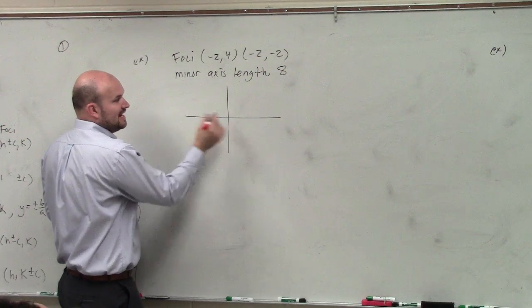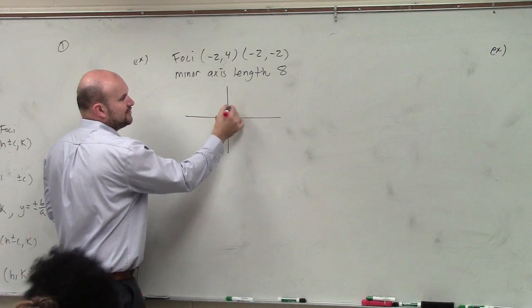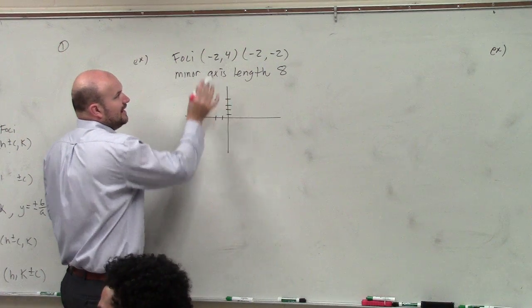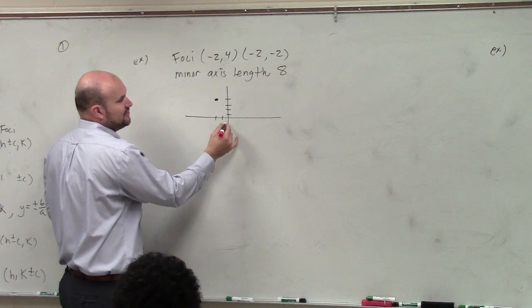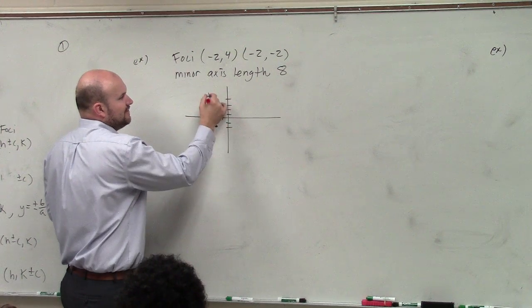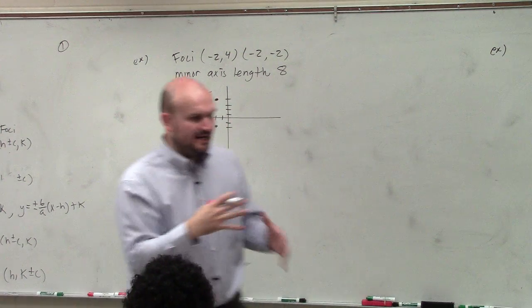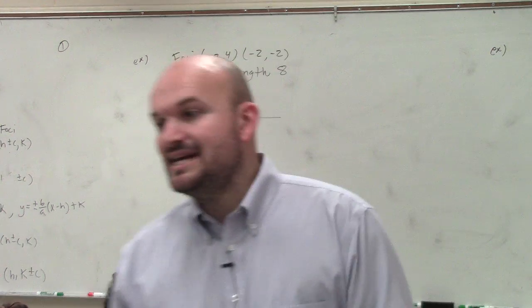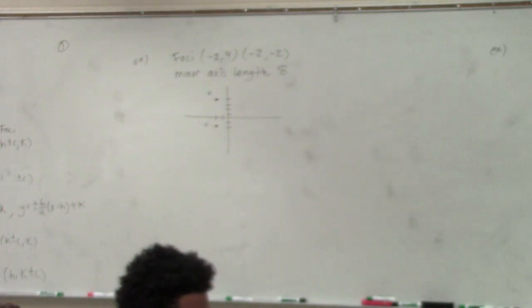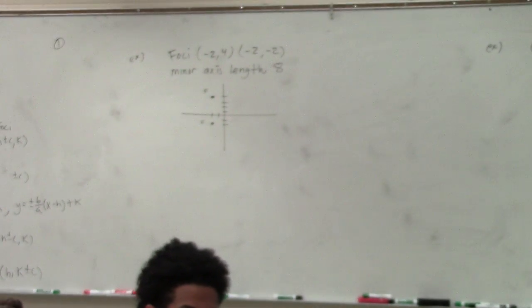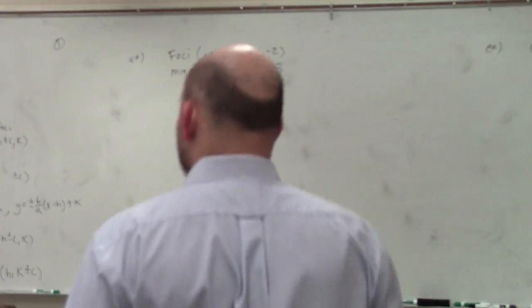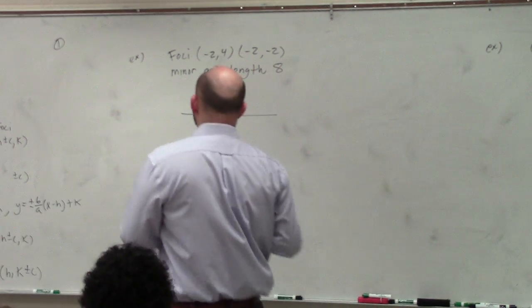Your foci here is at negative 2, 4, 1, 2, 3, 4. And your other foci is at negative 2, negative 2. Now again, remember these are your foci. But based on our understanding of an ellipse, we know that the center is directly in the middle between your two foci. It's also directly in between your two vertices. It's also directly in between your two co-vertices.